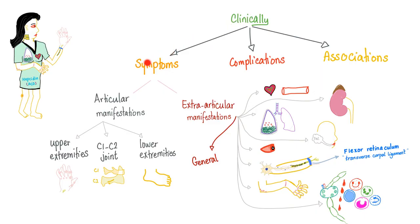Clinically, Rheumatoid has symptoms, complications, and associated symptoms. Symptoms are articular and extra-articular. Articular are upper, lower, and atlanto-axial. The extra-articular are general and organ-specific. Anemia is here — anemia is an extra-articular manifestation of Rheumatoid, which makes sense, because anemia is a problem in the blood, not in the joint.